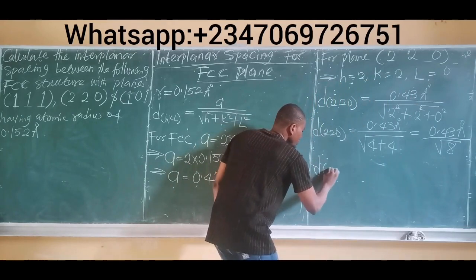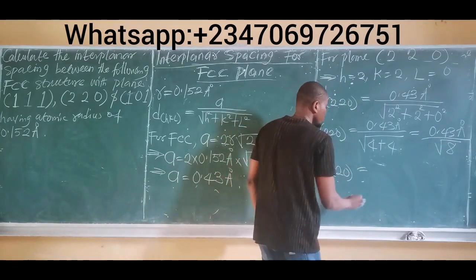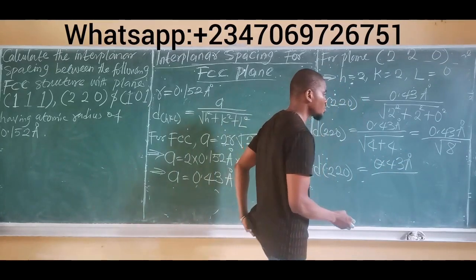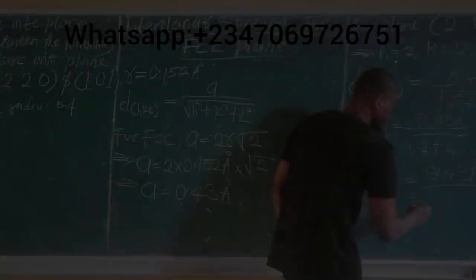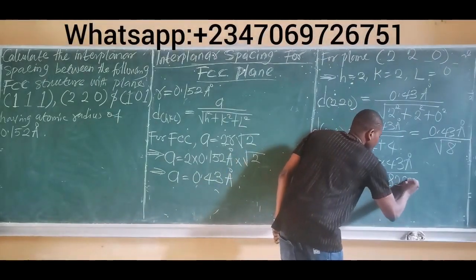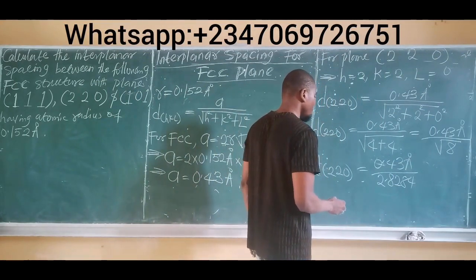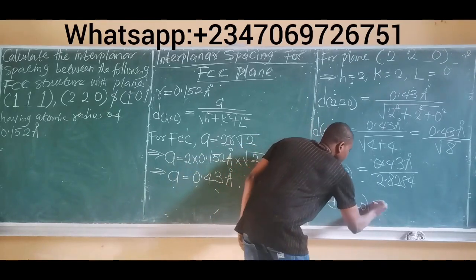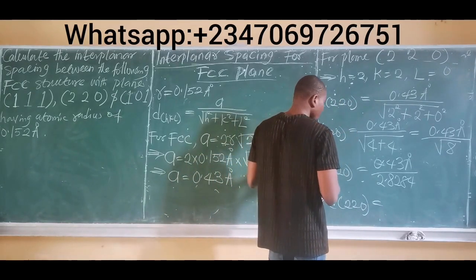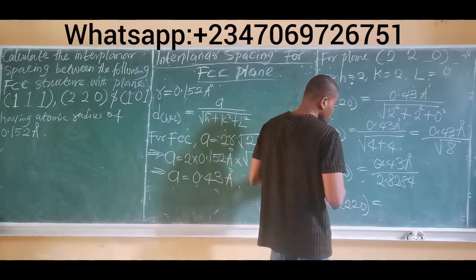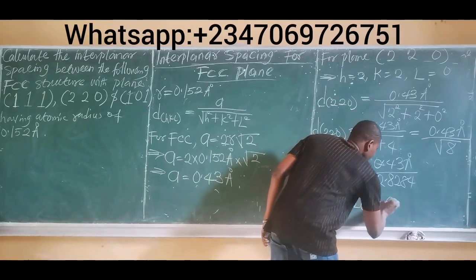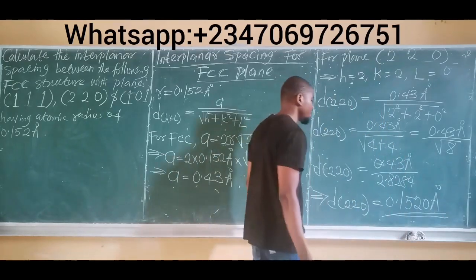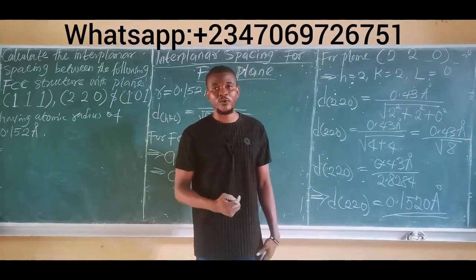The interplanar spacing for the (2,2,0) plane is 0.43 Angstrom units divided by √8. The square root of 8 is 2.8284. So 0.43 divided by 2.8284 gives us 0.1520 Angstrom units. This is the interplanar spacing for the (2,2,0) plane.